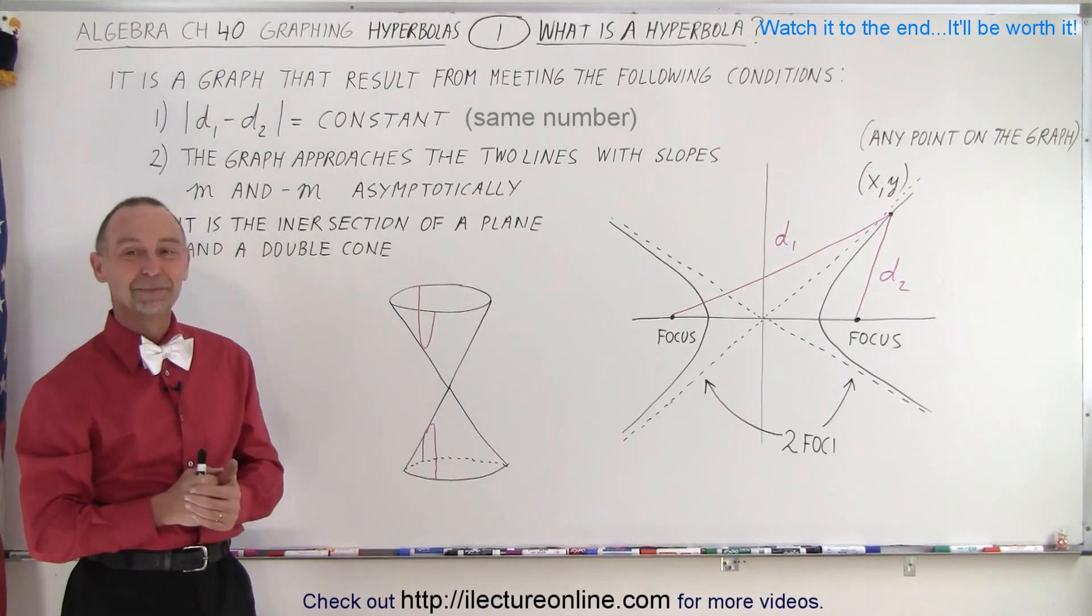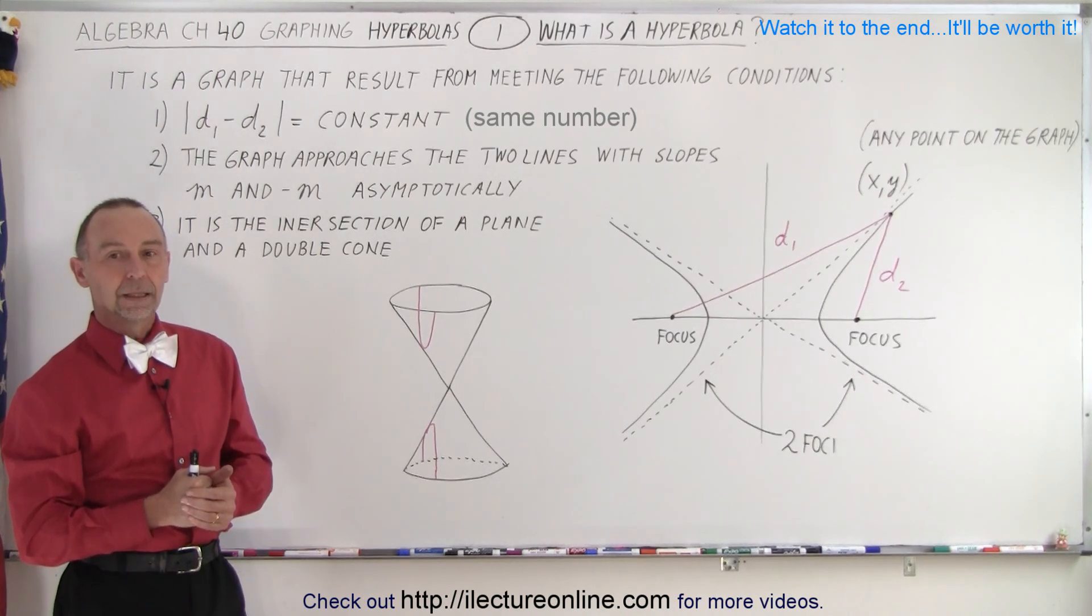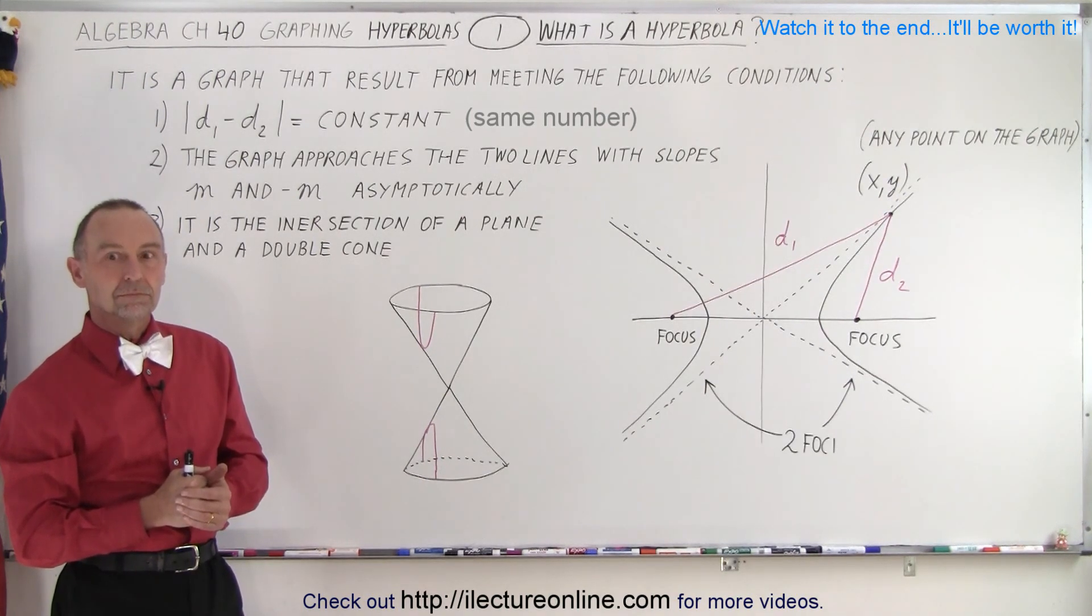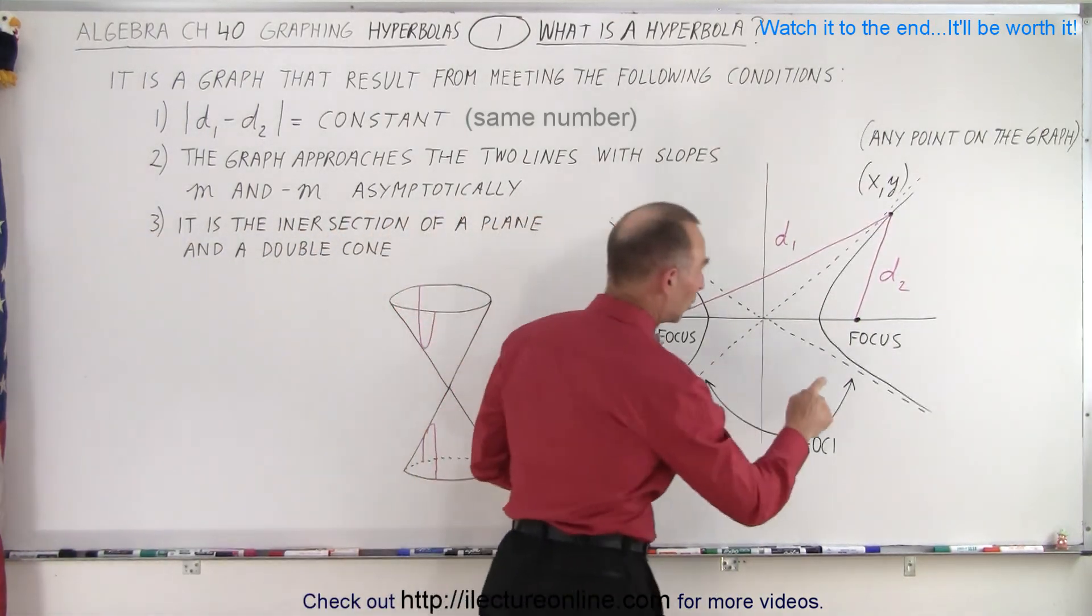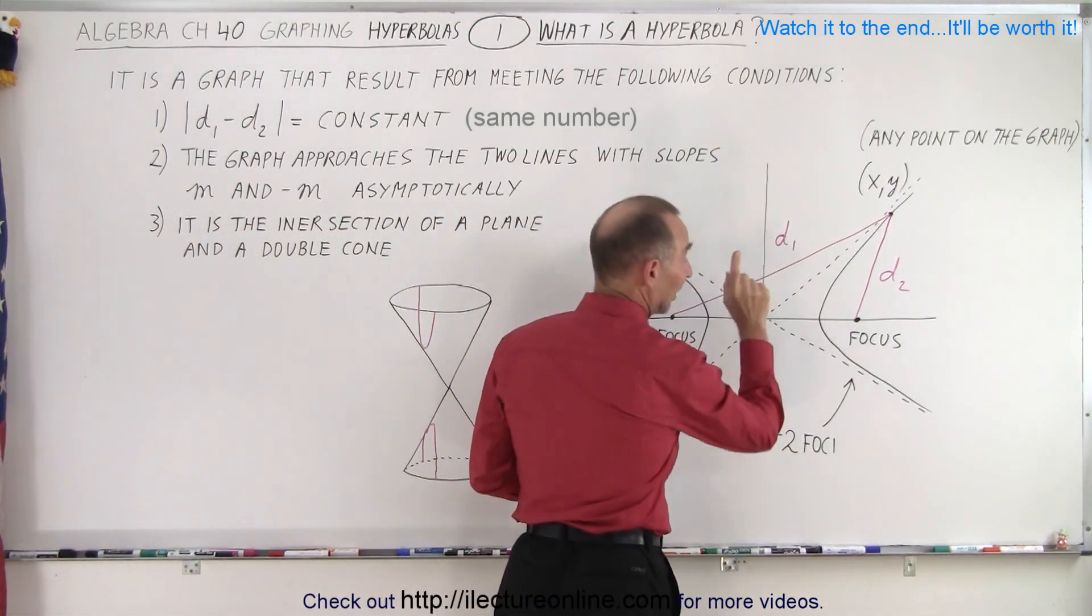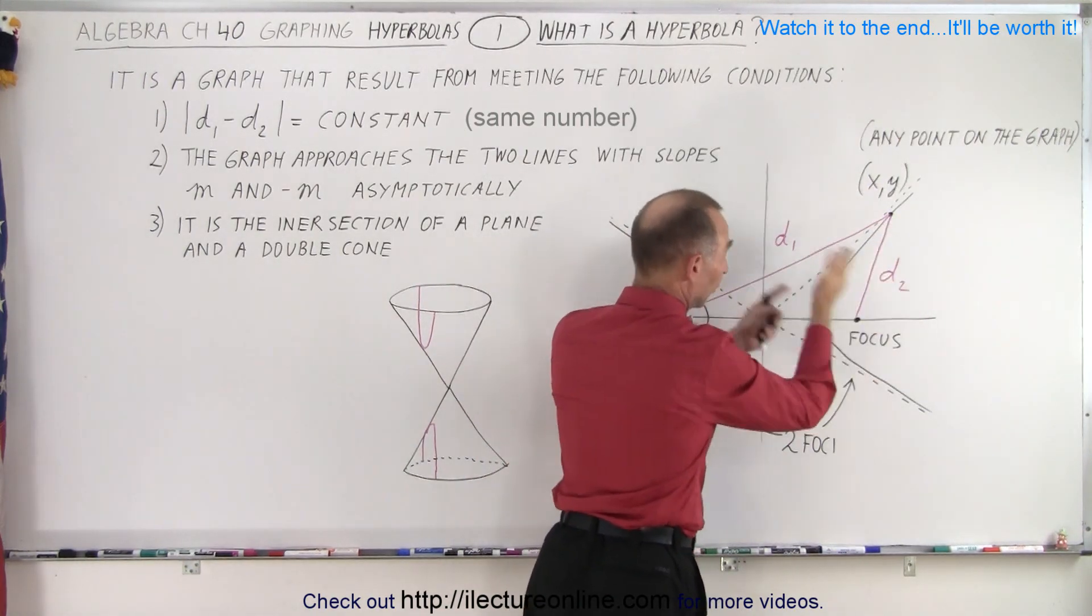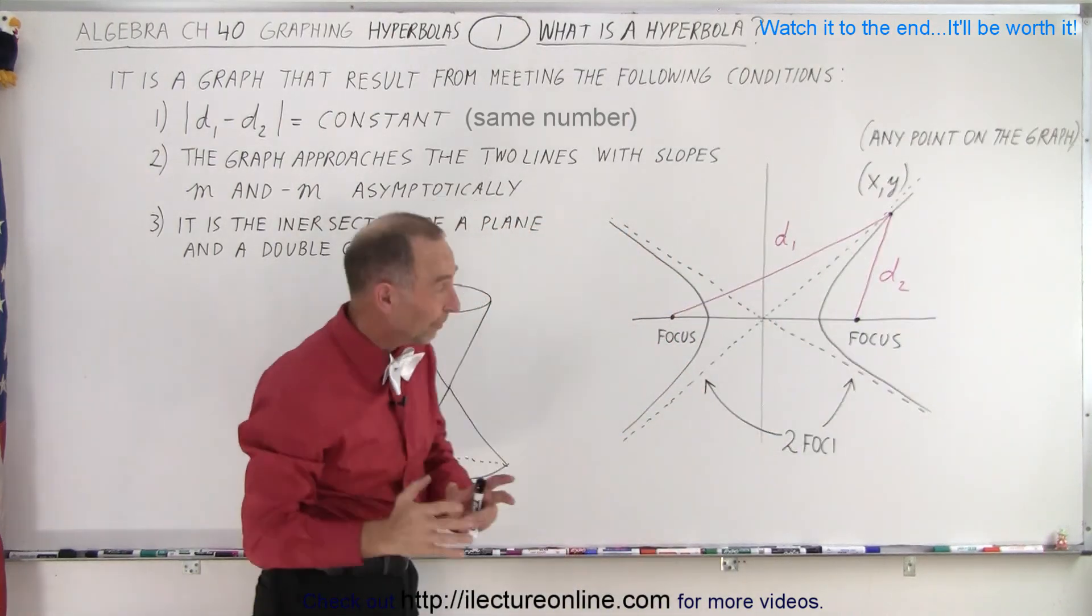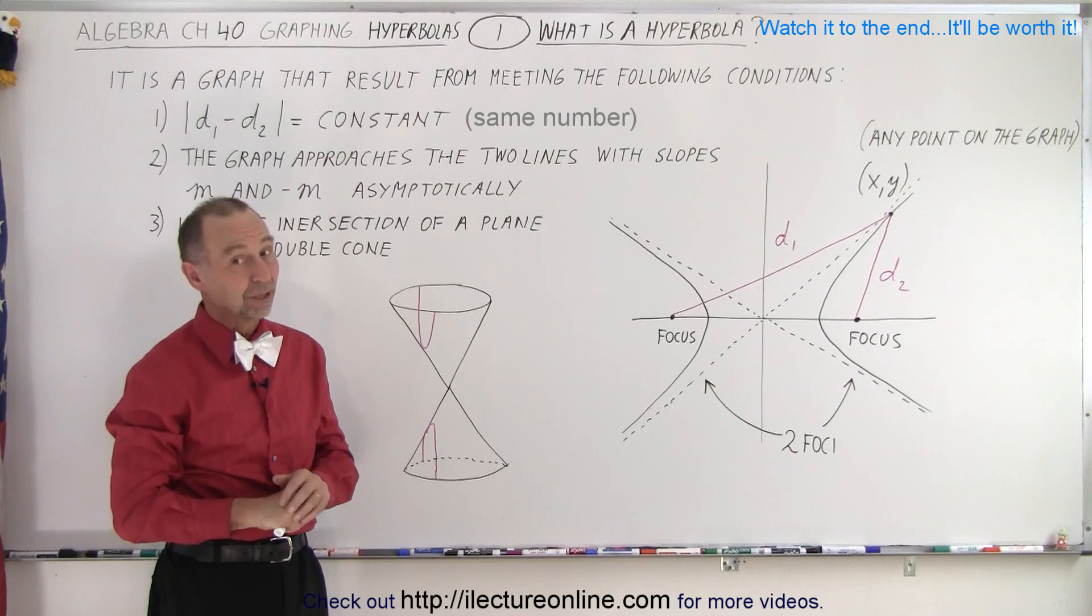Student: Wouldn't it be, what's the significance of being a constant? Doesn't it have to be a constant? D1 minus D2? Instructor: Yes. Always. On a hyperbola, the difference, it's the difference between this length and this length. So the distance here minus distance there, or you can reverse it, doesn't matter. That difference will always equal a constant. The same constant.